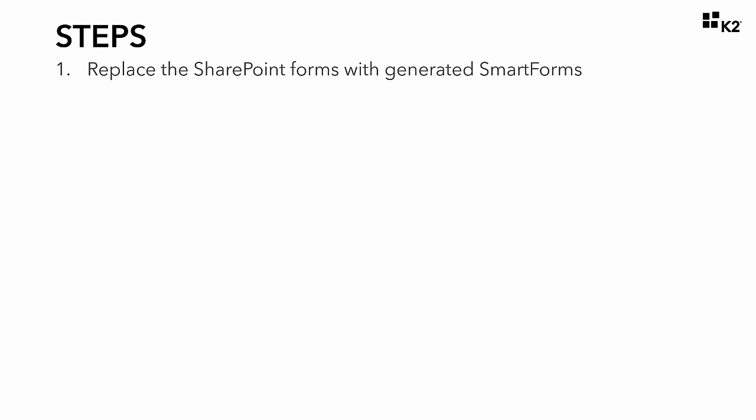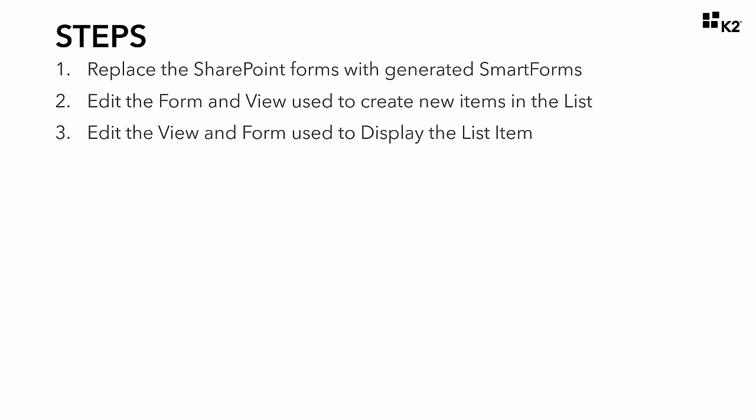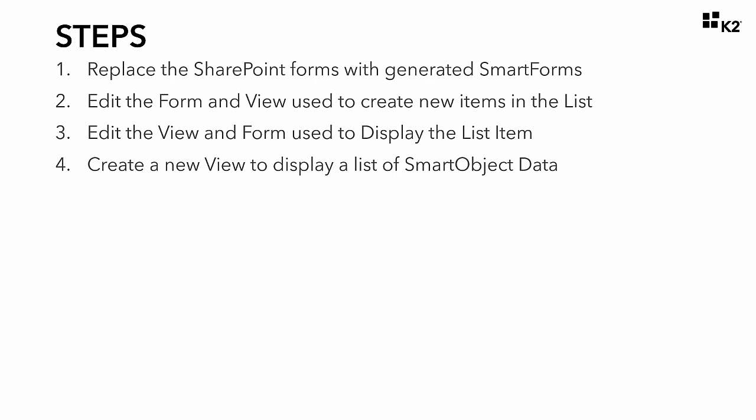Let's quickly touch on all the steps for this tutorial before we get started. In Step 1, you will perform the task of generating the K2 Smart Forms that will replace the default SharePoint forms used to interact with the Hello World list. By performing this task, we open the door for Steps 2 and 3, which will involve editing the forms and views to create new list items and display the list items respectively. In Step 4, we will create a new view which will use the Hello World list's smart object to display a listing of the current items in the Hello World list.